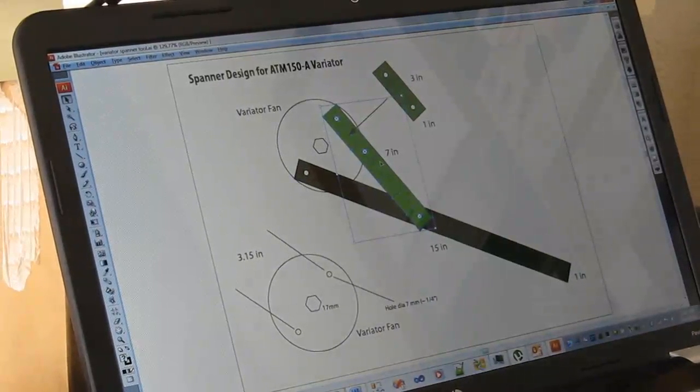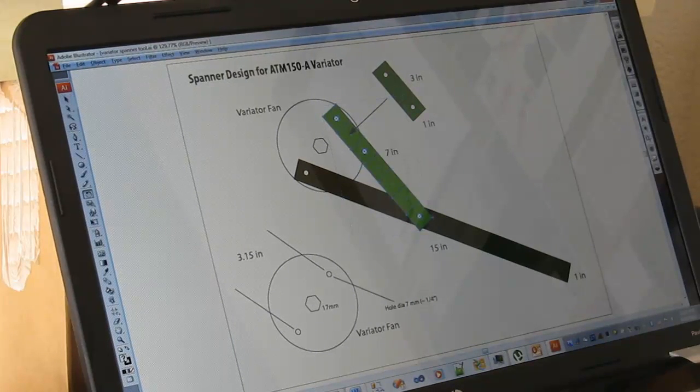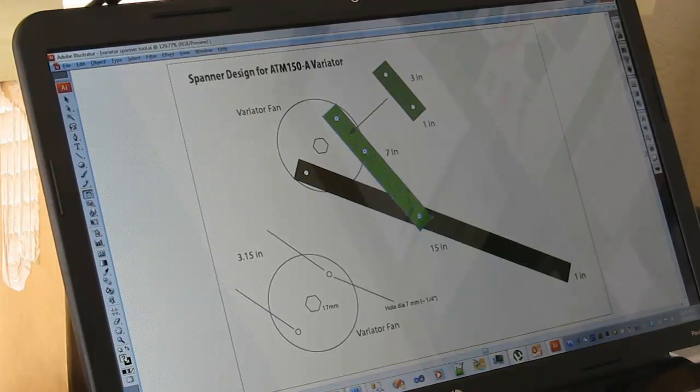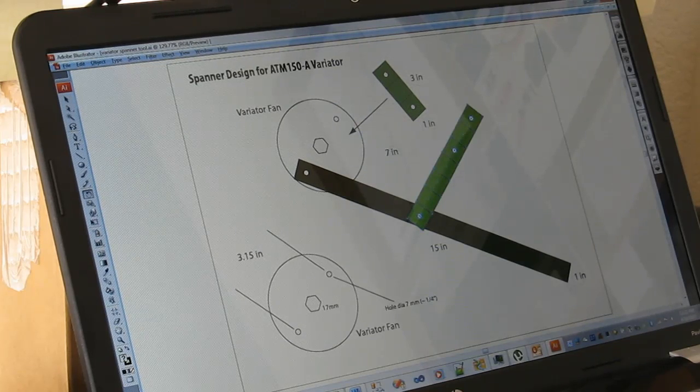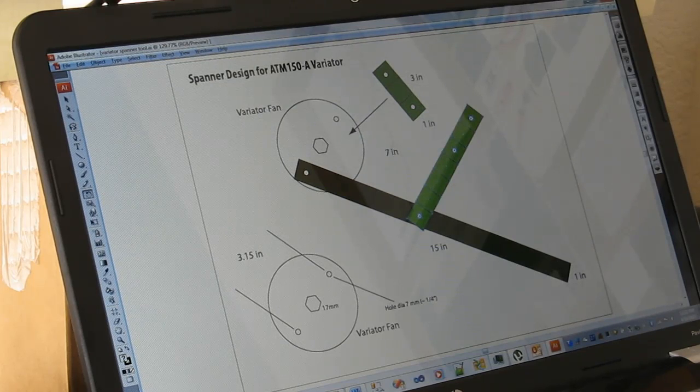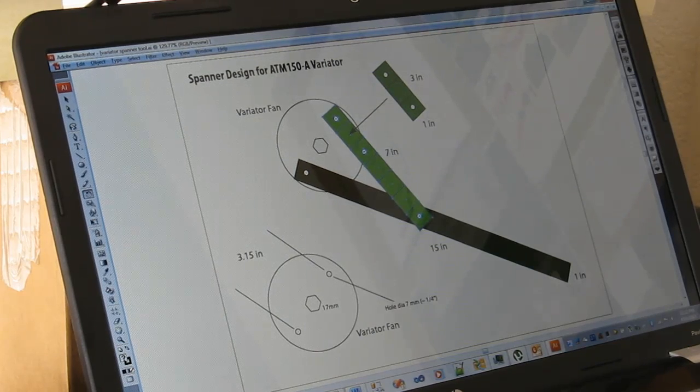They say there's no cheating in art and the way I designed this was I used Adobe Illustrator and drew a scale drawing of the spanner I wanted to create. And in Illustrator you can use all sorts of weird stuff like you can rotate and see, check the dynamics of what you're creating. It's cheating I know, but it works.